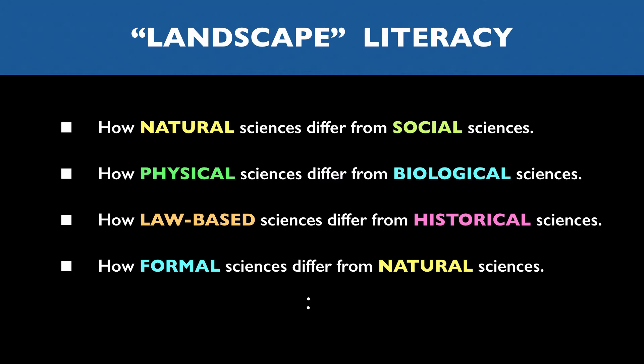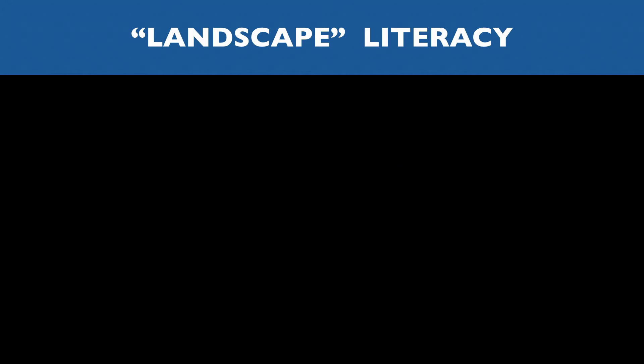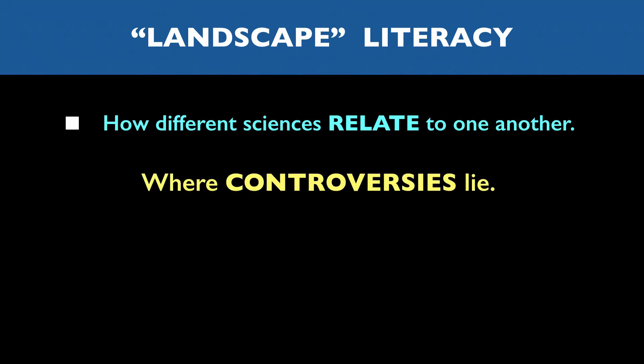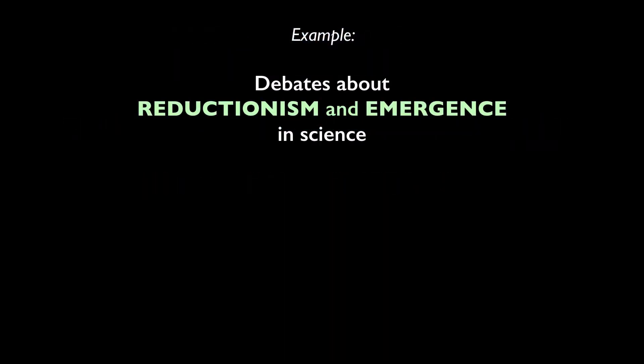Now a person who's literate in science should also be able to tell you something about how different sciences relate to one another, and have some idea of where controversies lie on the matter. Debates about reductionism and emergence in the sciences, for example, often come down to debates about how one field of science relates to another.